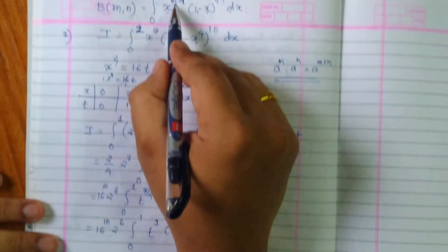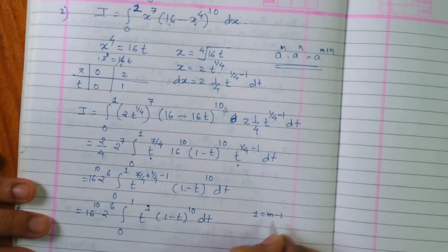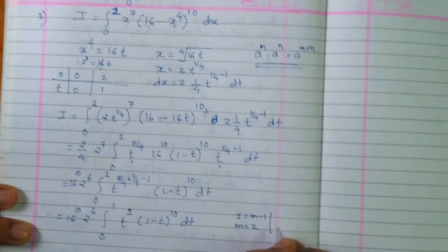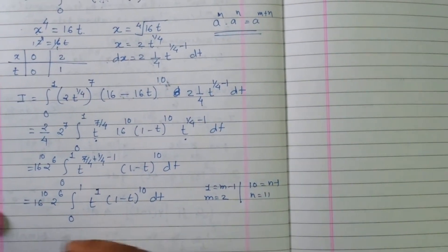To adjust the power in this fashion, 1 equals m minus 1, hence m equals 2. Similarly, 10 equals n minus 1, so n equals 11.